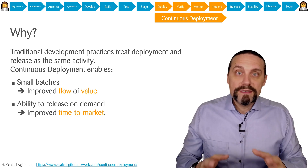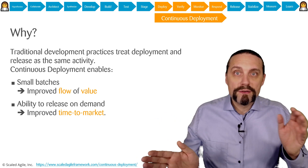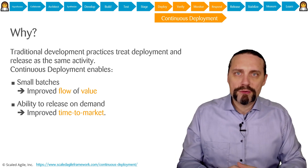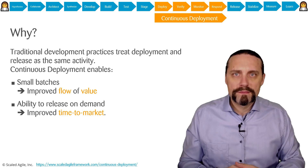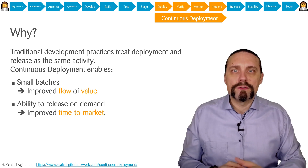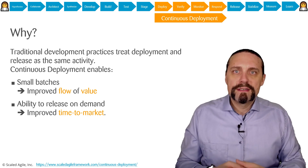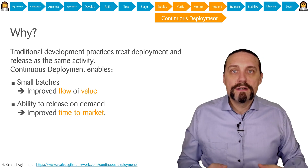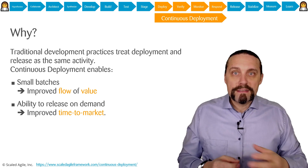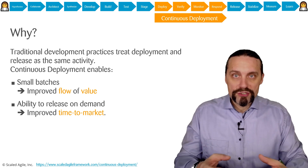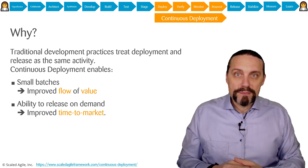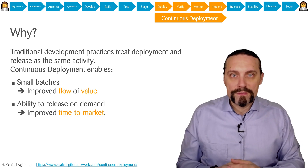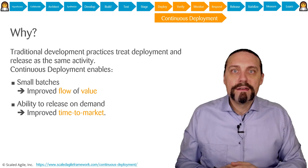To do this we need to separate deployment from release. A deployment is bringing the compiled code into production with the feature flag off. A release is switching on the feature flag so that users can use the new feature — this enables us to release on demand. All changes are already in production and the business can decide when the time is right to release the feature, which massively increases the time to market.